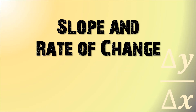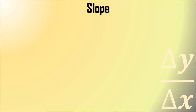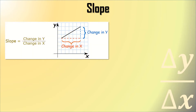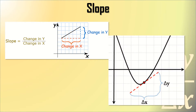Our next topic will be about the slope and the rate of change. These two are the main applications of our derivatives. First, we are going to tackle the slope. As I have already discussed in our previous topic, the derivative is all about slope, wherein slope is equal to the change in y with respect to x, for a line with a linear equation in our graph.